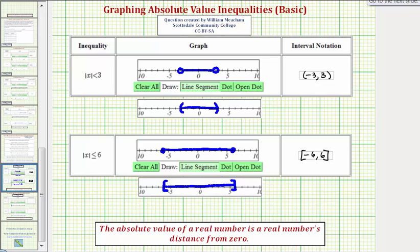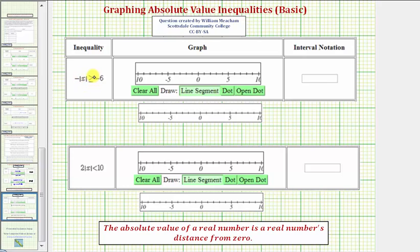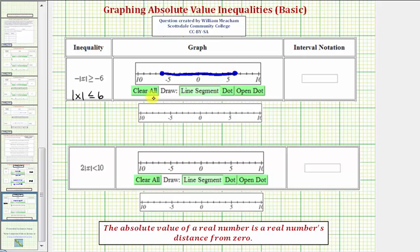Let's take a look at two more examples. Here we have negative absolute value of x greater than or equal to negative six. The first step is to solve the inequality for the absolute value of x. To do this, we multiply or divide both sides by negative one — and when we do this with an inequality, we must reverse the inequality symbol. So multiplying both sides by negative one, we get the absolute value of x is less than or equal to positive six. The solution set is all real numbers whose distance from zero is less than or equal to six units — just like the previous example. We have closed points on negative six and six, and graph the interval between.